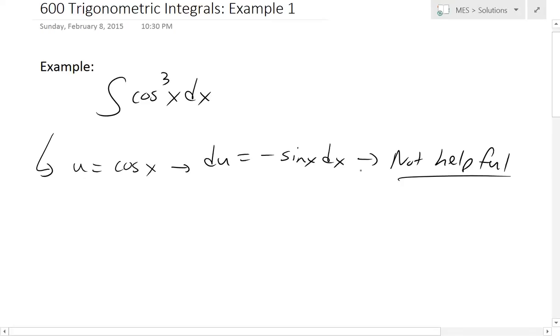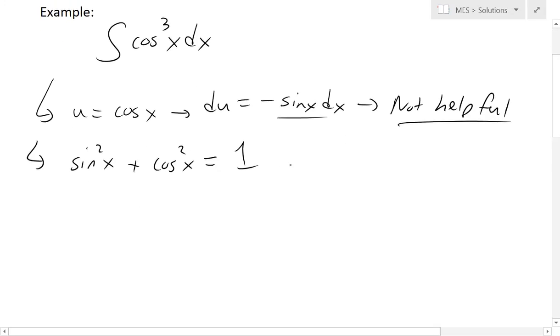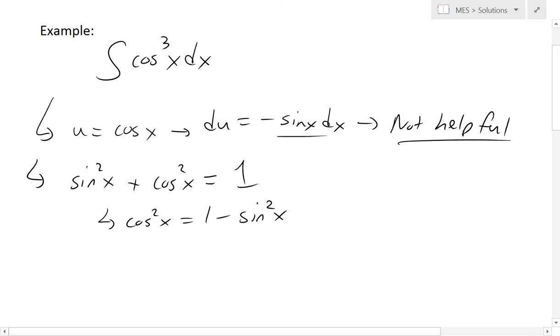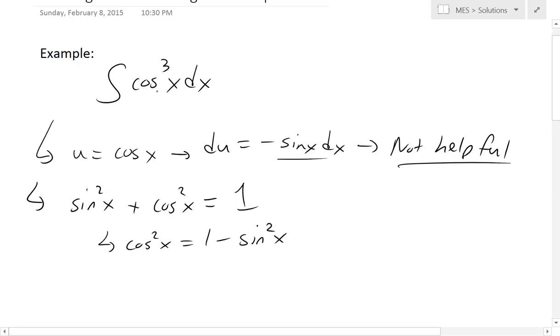But one way of bringing in another sine factor is by considering the trig identity, the famous one: sine squared of x plus cosine squared of x equals 1. So we could write cosine squared of x equals 1 minus sine squared of x. In this case, since we're only dealing with cosine cubed, we could write this as cosine squared times cos x.